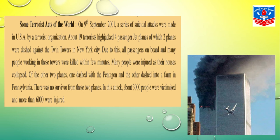The passengers in the planes died, along with the people working in the offices of the twin towers. Many people were injured as their buildings collapsed. Of the other two planes, one dashed with the Pentagon and the other crashed in a farm in Pennsylvania. In this attack, about 3,000 people were victimized and more than 6,000 were injured. If you want to study this in detail, just search on the internet about what happened on 9th September.